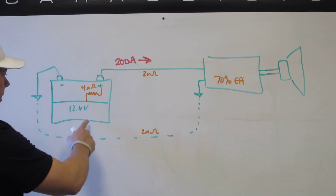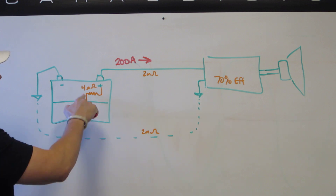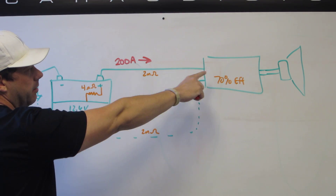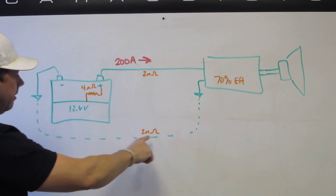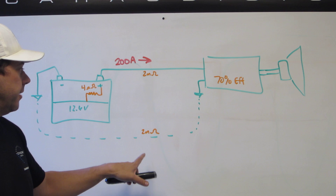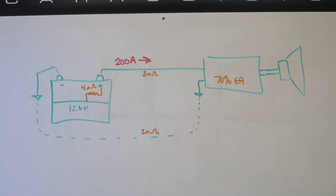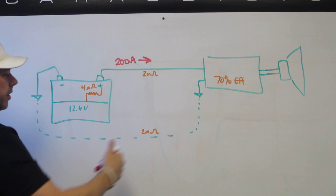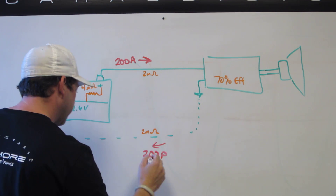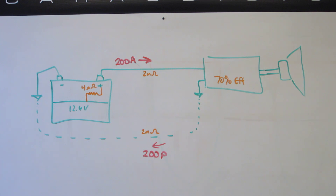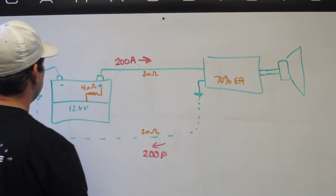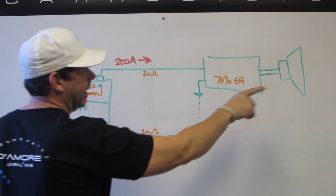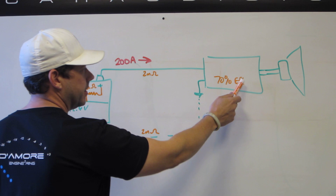This was our homework problem: we had a 12.6-volt lead acid battery, and 4 milliohms shows the internal resistance of the battery. There's a 20-foot piece of appropriate gauge copper cable going to our amplifier positive, and the ground return path has about 2 milliohms of resistance. We have 200 amps of current flowing into our amplifier and back on the ground path. The questions were: what is the voltage at the battery terminals, at the amplifier terminals, what is the input power, and what is the output power given a 70% efficiency?